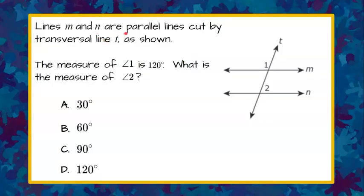Lines M and N are parallel lines cut by the transversal line T, as shown. The measure of angle 1 is 120 degrees. What is the measure of angle 2?